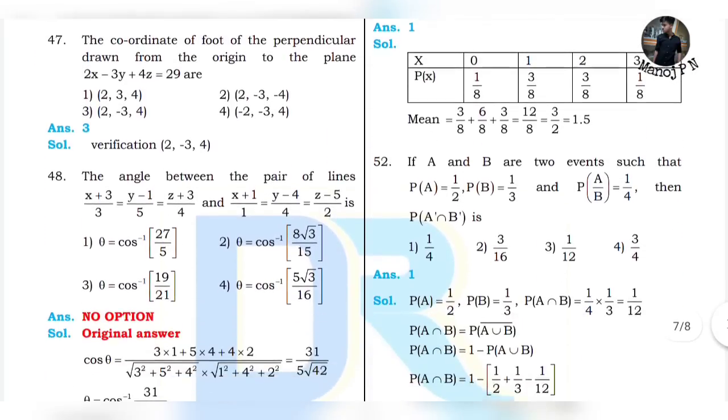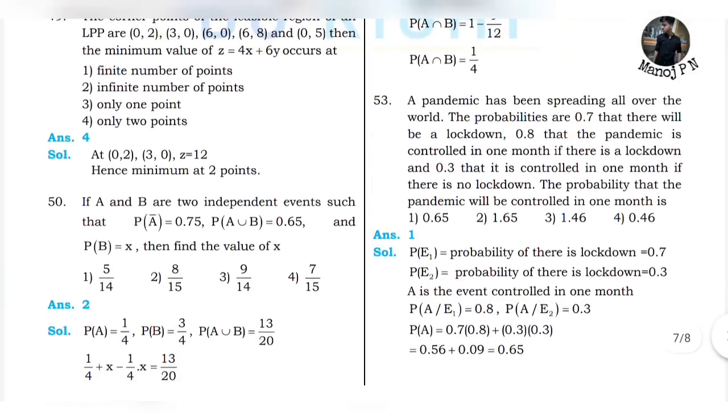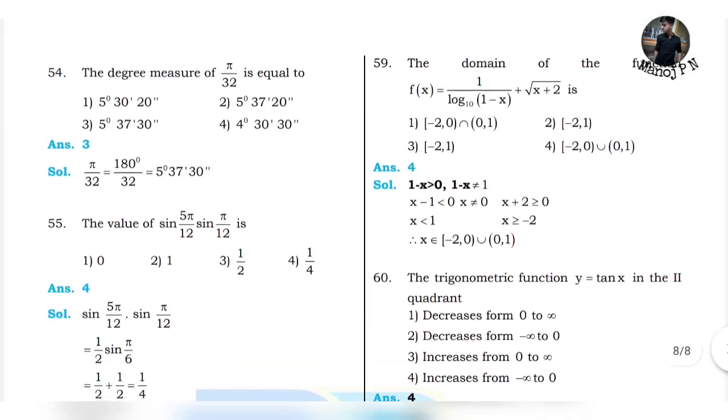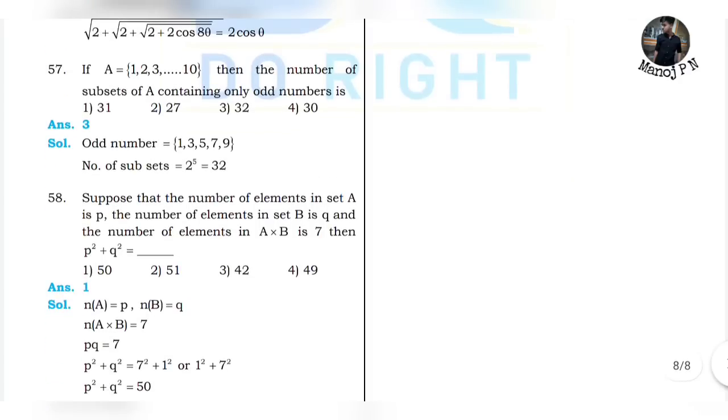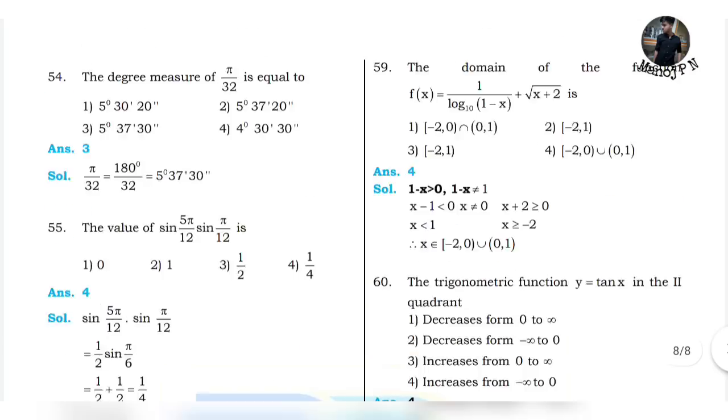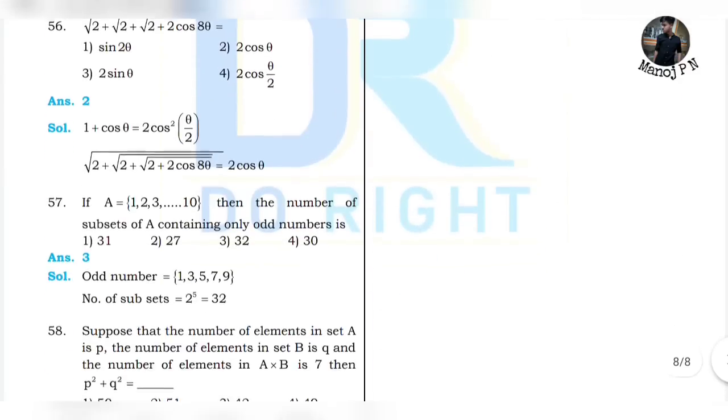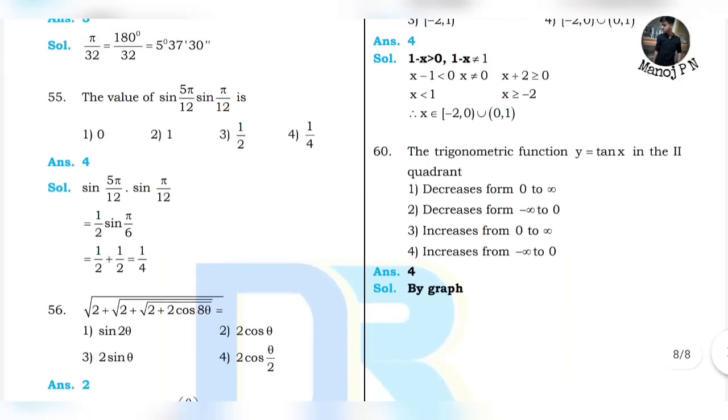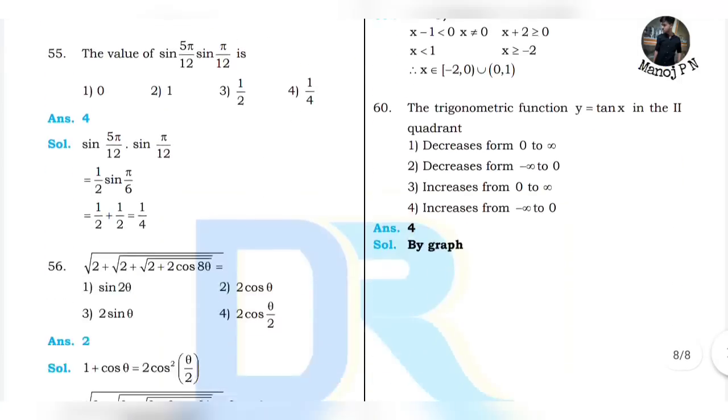51 is 1. 53 is 1. 53 is 1. And then 54 is 3. 55 is 4. 56 is 2. 57 is 3. 58 is 1. And 59 is 4. 56 is 4.